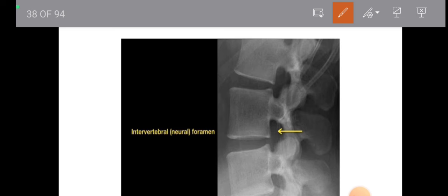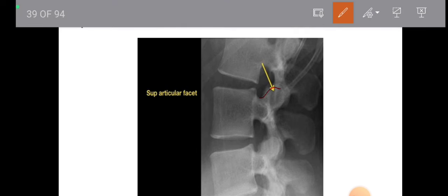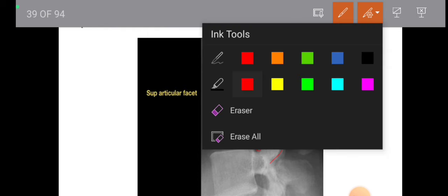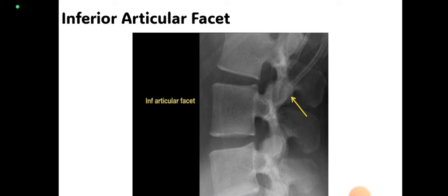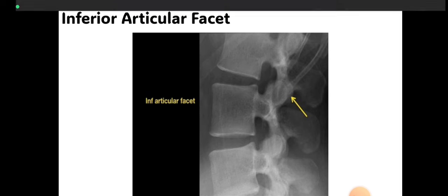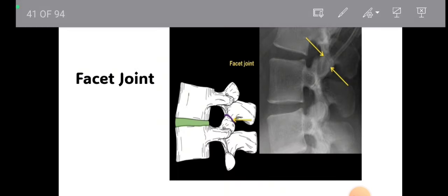You have to look for the intervertebral foramen present between two vertebrae. Then there is the superior articular facet — somewhat like a bulb shape — and the inferior articular facet. The inferior articular process of the upper vertebra joins with the superior articular process of the lower vertebra to form a facet joint. Here you can see a yellow line representing the facet joint, and a purple line visible between the two facets.